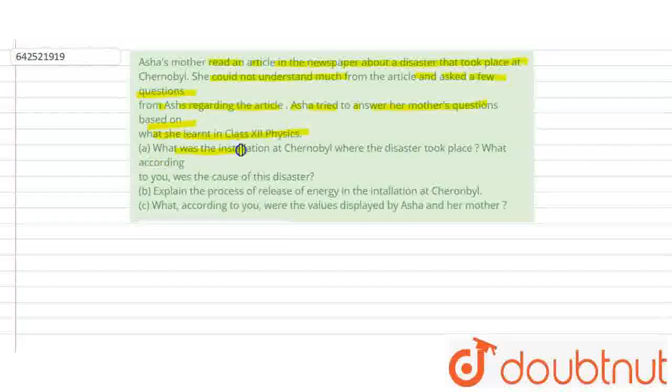First question is, what was the installation at Chernobyl where the disaster took place? What, according to you, was the cause of this disaster?